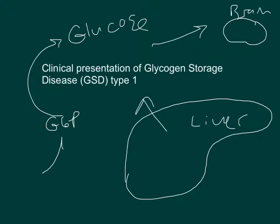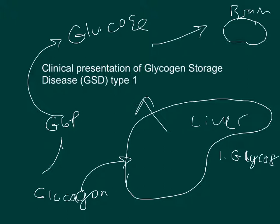So when you're low on blood sugar, your pancreas will produce glucagon, and glucagon will act on the liver to tell it to perform two things. First is glycogenolysis, which breaks down glycogen stores and turns that into glucose. The second one is gluconeogenesis — you can actually convert amino acids into sugars.